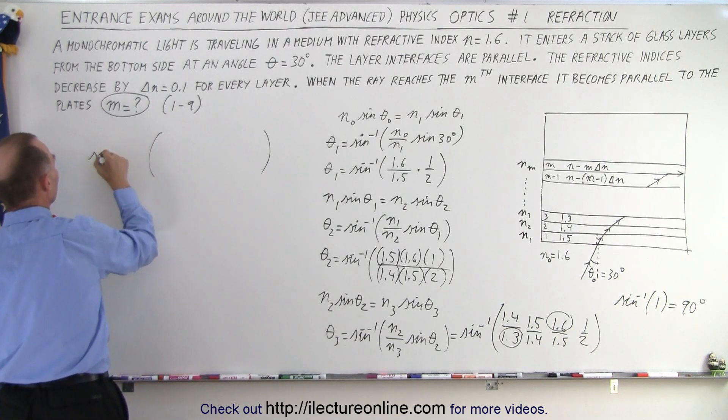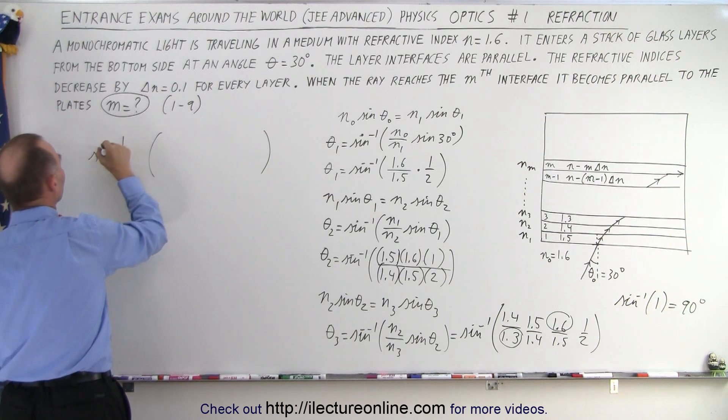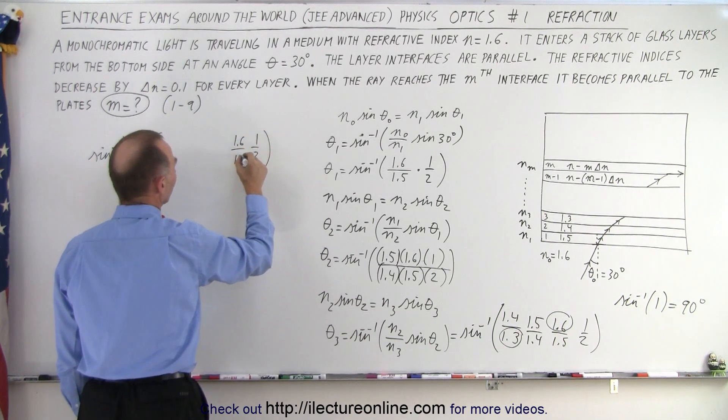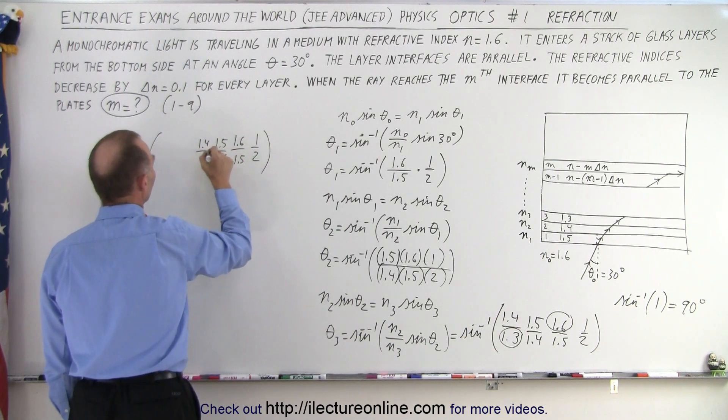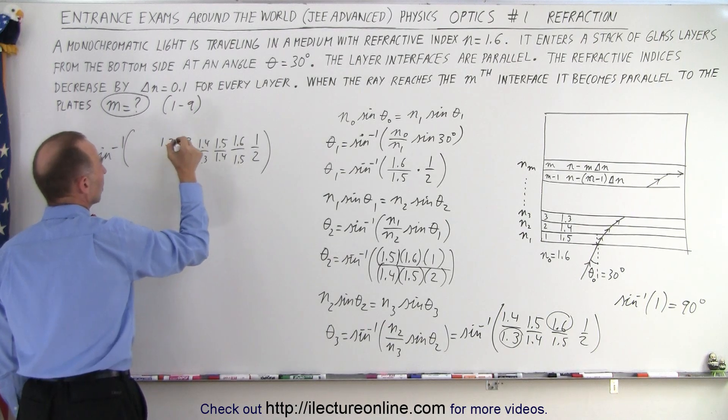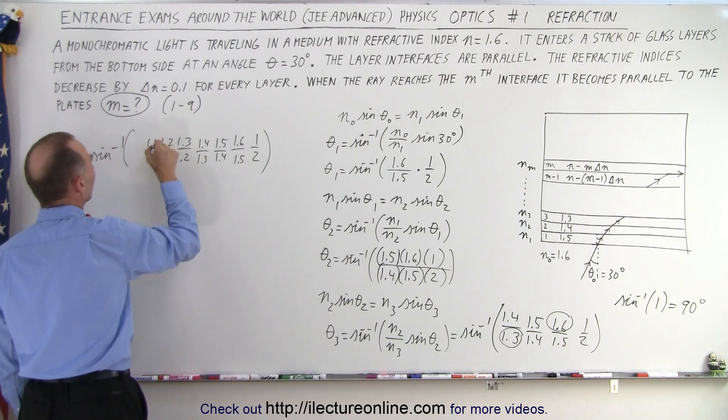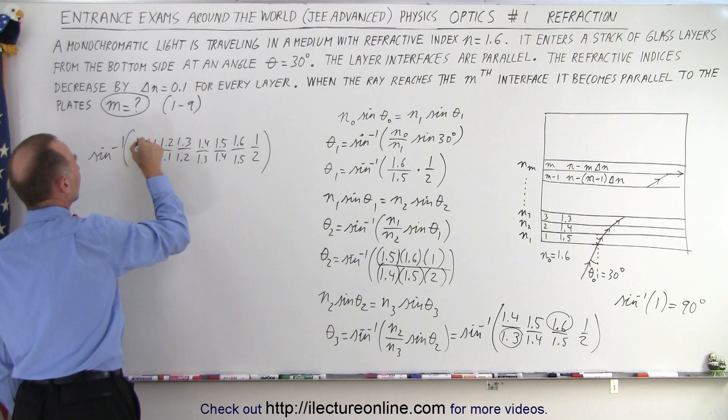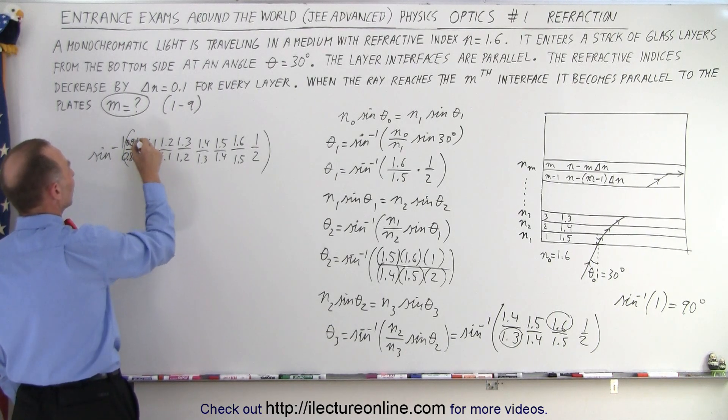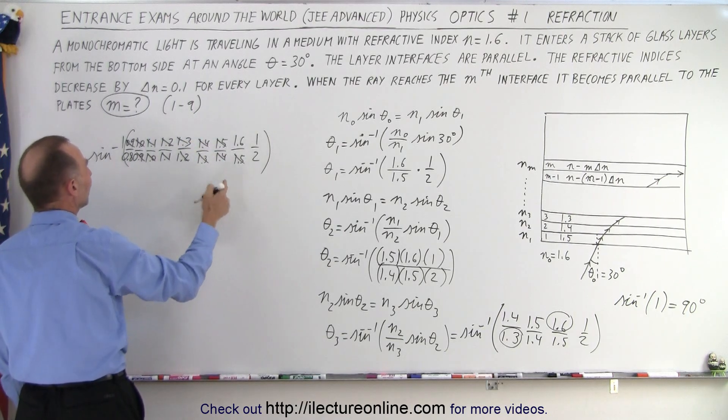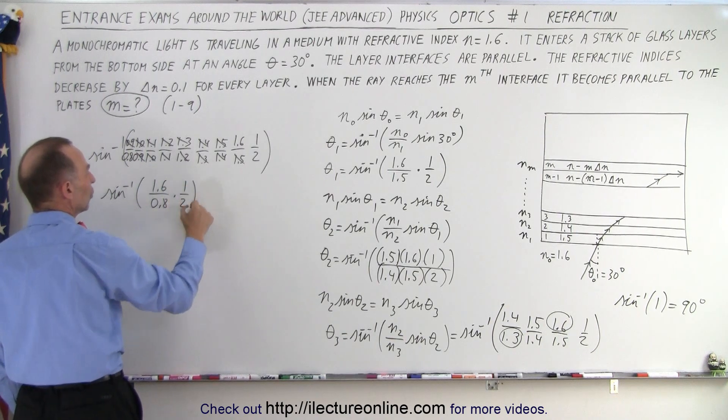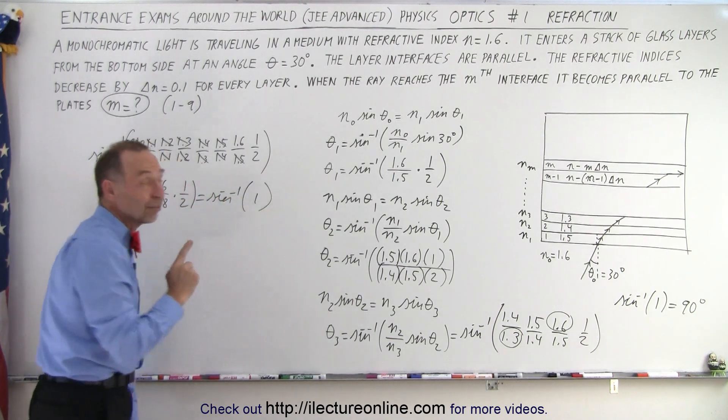We're looking for the inverse sine of, working our way backwards: we had 1 half, then 1.6 divided by 1.5, 1.5 divided by 1.4, 1.4 divided by 1.3, 1.3 divided by 1.2, 1.2 divided by 1.1, 1.1 divided by 1.0, 1.0 divided by 0.9, and 0.9 divided by 0.8. Now I can stop, because notice the 0.9s cancel out, the 1.0, the 1.1, the 1.2, the 1.3, the 1.4, the 1.5, and I'm left with the inverse sine of 1.6 divided by 0.8, which equals 2, times 1 over 2, which equals the inverse sine of 1, and that's when I get an angle of 90 degrees.